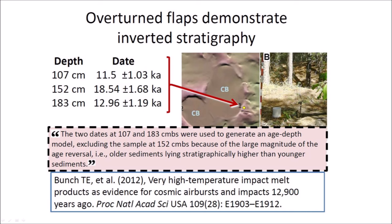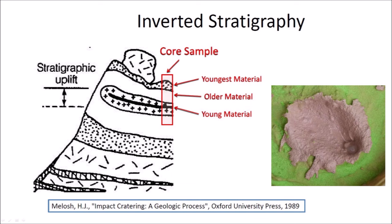My prediction in 2017 that the raised rims of the Carolina Bays should have inverted stratigraphy was based on my impact experiments that produced elliptical cavities with overturned flaps, and on many geological publications describing the characteristics of impact craters. The book by Professor Jay Melosh, published in 1989, illustrates the inverted stratigraphy of a crater rim. If we obtained a core sample from the rim of an impact crater, we would see the youngest material in the top layer, followed by older material excavated by the projectile from a deeper layer, and going deeper, we would find the young material that was the surface of the terrain at the time of the impact. This is exactly what was described in the 2012 paper by Ted Bunch.